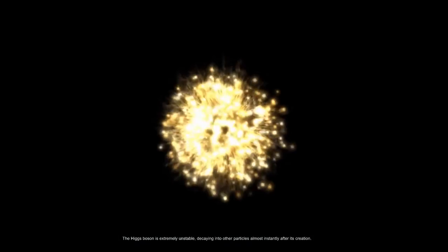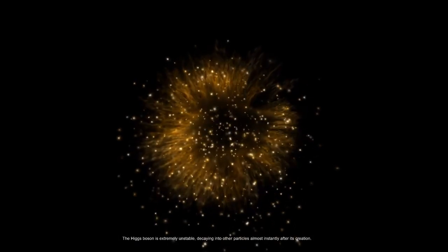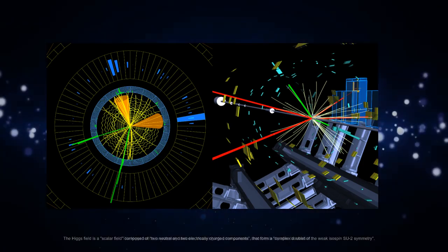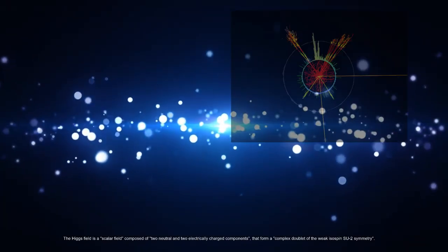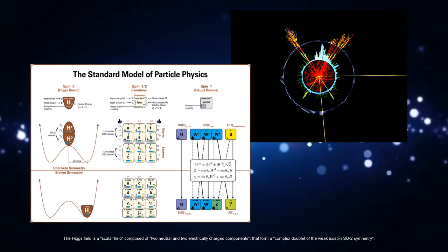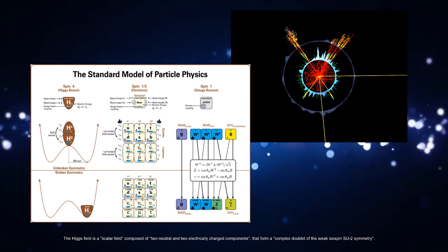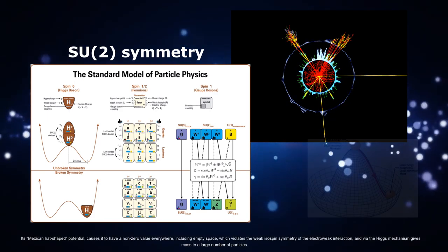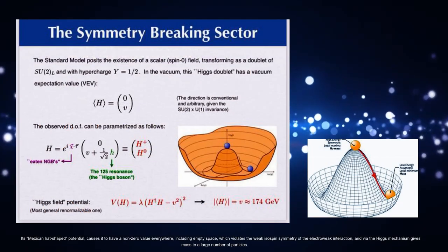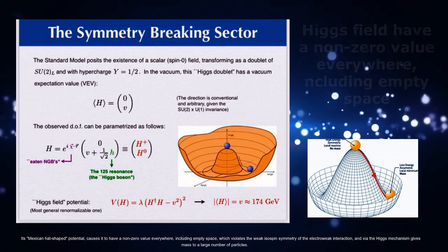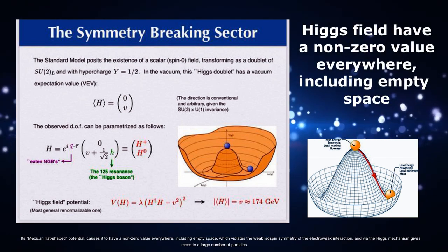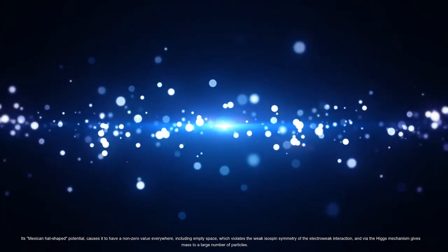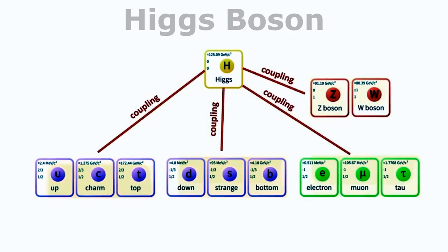The Higgs boson is extremely unstable, decaying into other particles almost instantly after its creation. The Higgs field is a scalar field composed of two neutral and two electrically charged components that form a complex doublet of the weak isospin SU(2) symmetry. Its Mexican hat-shaped potential causes it to have a non-zero value everywhere, including empty space, which violates the weak isospin symmetry of the electroweak interaction and via the Higgs mechanism gives mass to a large number of particles.